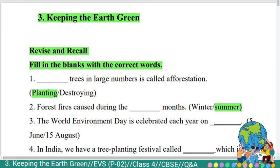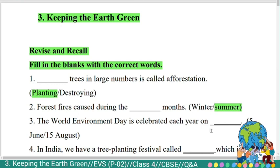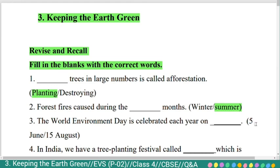Third question: 'The World Environment Day is celebrated each year on blank — 5th June or 15th August?' The answer is 5th June. The World Environment Day is celebrated each year on 5th June.